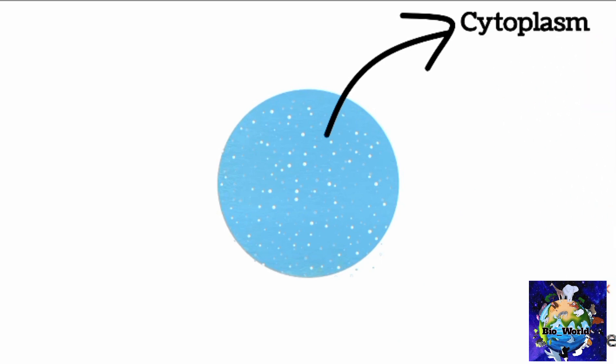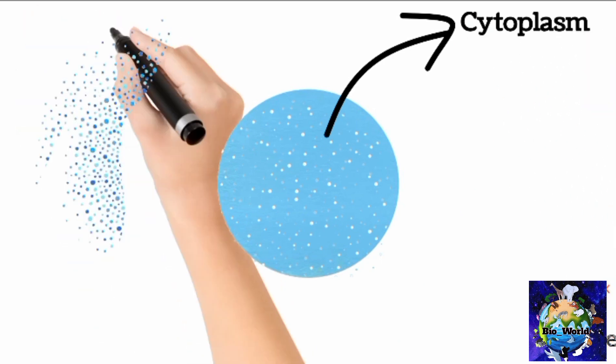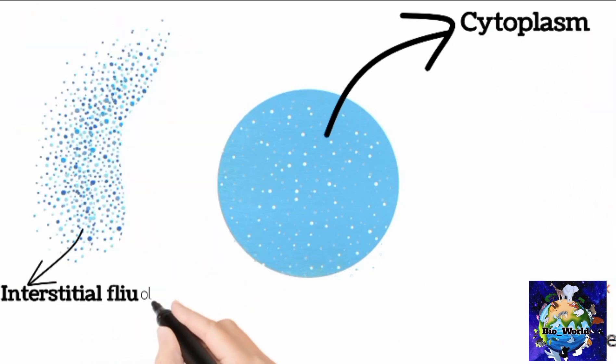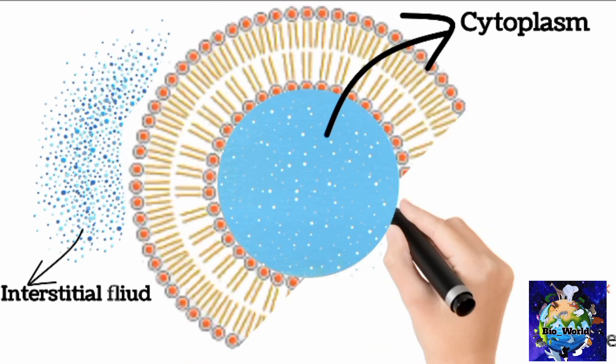Now tries to understand the arrangement of phospholipids in plasma membrane, that how these phospholipids are arranged. For example, this is a cell without membrane and this is cell's internal fluid that we call cytoplasm. This is the fluid outside the cell which is known as interstitial fluid.